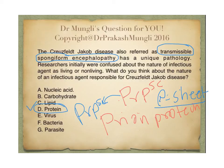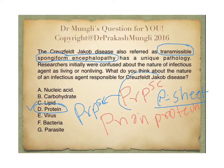Once you acquire PrPSc, it acts as a template and converts PrPC into PrPSc, leading to accumulation of beta sheets as amyloid fibers and causing neurodegeneration. To summarize, Creutzfeldt-Jakob disease, bovine spongiform encephalopathy, and scrapie are all referred to as prion disease. The disease-causing agent is PrPSc — an infectious protein molecule rich in beta sheet.